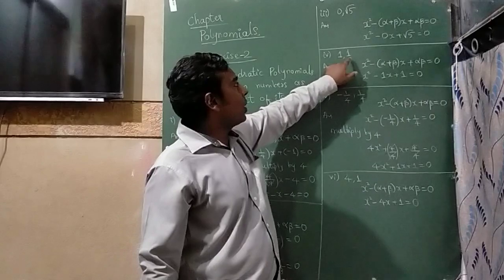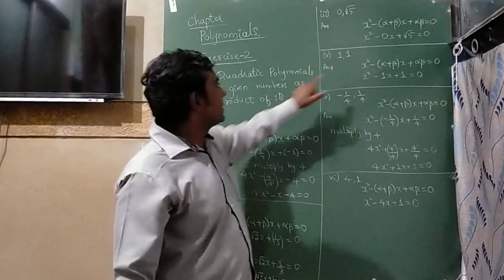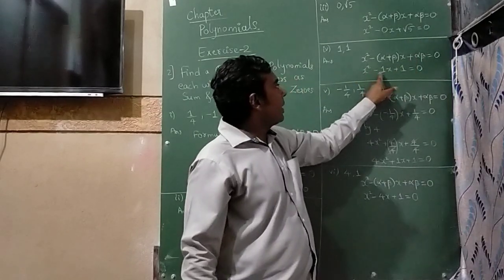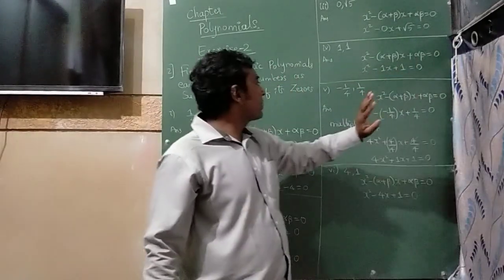Here the question is 1, 1. Sum is 1 and the product is 1. So x² - x + 1 = 0.